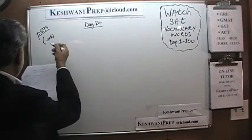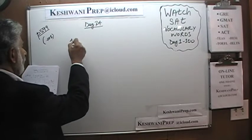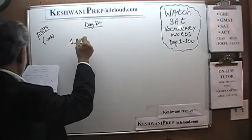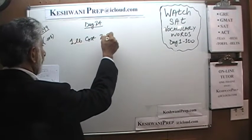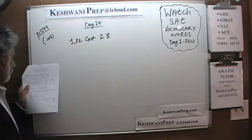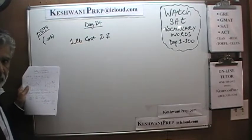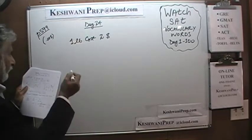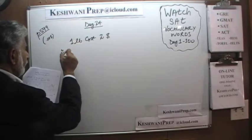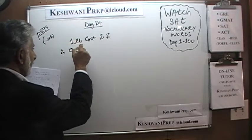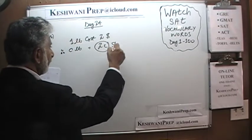Problem one: it says that one pound costs two dollars. The question is how many dollars will C pounds cost. Well, if one pound costs two dollars, then C pounds should cost two times C. Obviously simple enough.